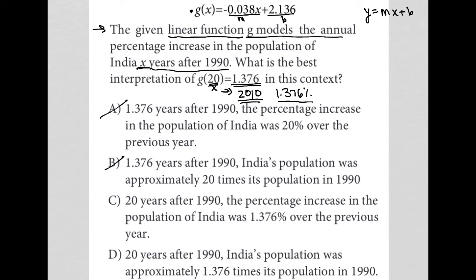Choice C says 20 years after 1990, so that's good because we knew that x represents the number of years after 1990. The percent increase in the population of India was 1.376% over the previous year. I like that answer. I'm pretty sure that's the correct answer, but I'm also going to take a look at the next option as well.